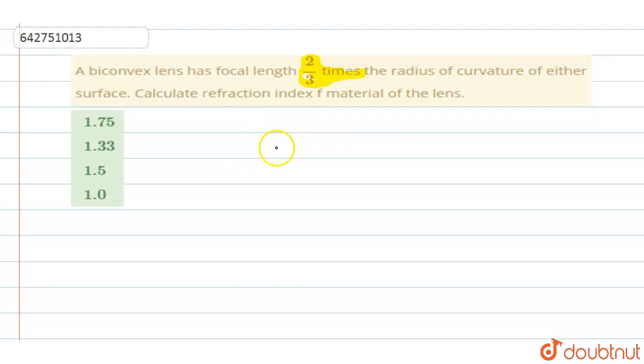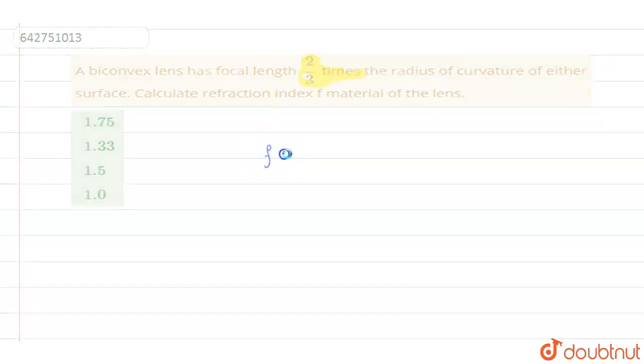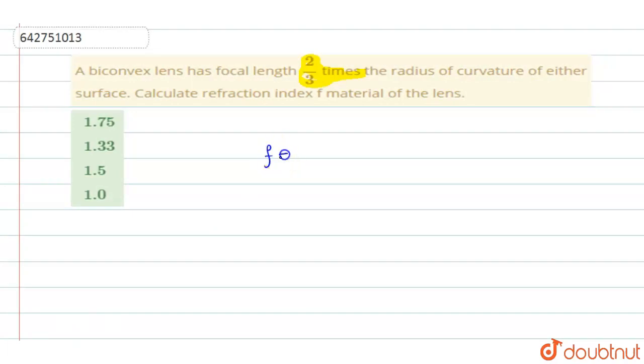So in this biconvex lens, they are saying that the focal length is 2 by 3 times the radius of curvature. So f is equal to 2 by 3 times of r, the radius of curvature.